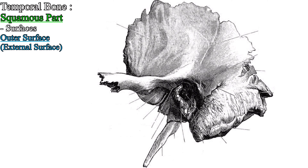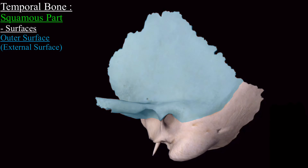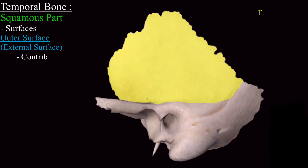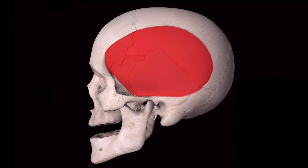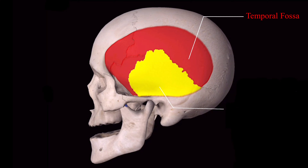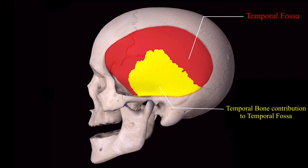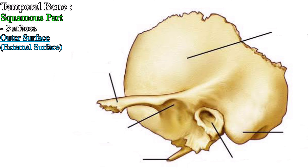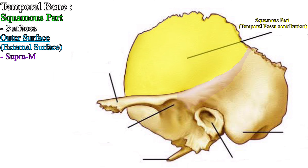On the external surface is present a groove which lodges the middle temporal artery. The yellow part of the external surface contributes to the temporal fossa. In the complete skull model, the entire red area is the temporal fossa, and the highlighted yellow area is the contribution of the external surface of the squamous part to the temporal fossa.